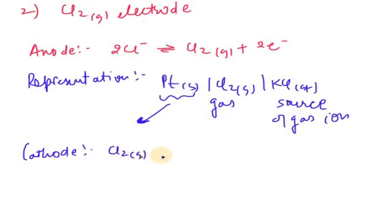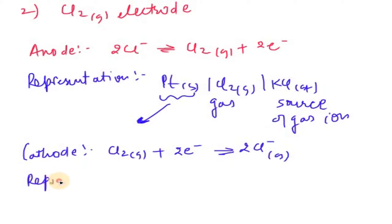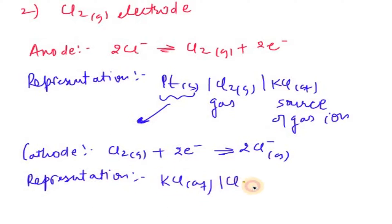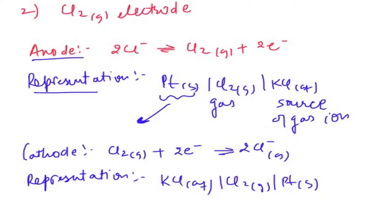The representation at the cathode is: Cl₂(g) + 2e⁻ → 2 Cl⁻. The cell representation for the cathode is written as: KCl(aq) | Cl₂(g) | Pt(s). That is how the anode and cathode are each represented.